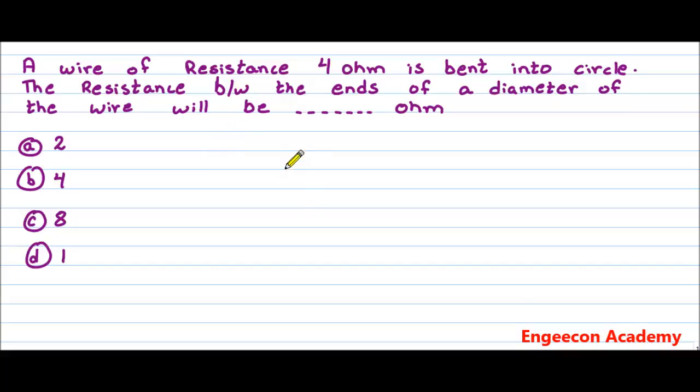Now this is a very important question regarding resistance: a wire of resistance some ohm is bent into a circle. The resistance between the ends of a diameter of the wire will be equal to...